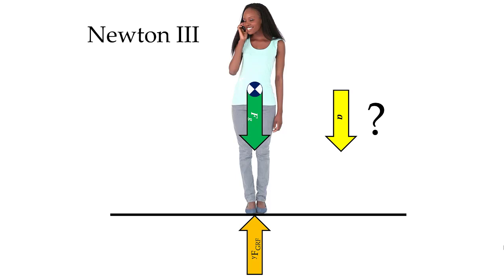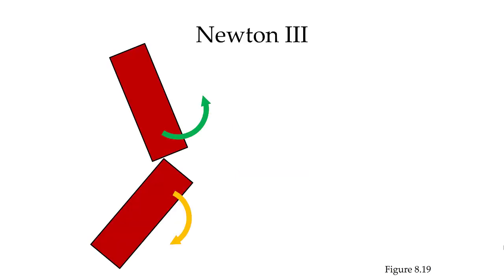Newton's third law tells us that for every force there is an equal and opposite reaction force. Those forces are equal in magnitude, opposite in direction, and acting on different bodies. We can say the same thing about a torque: for every torque, there is going to be an equal and opposite reaction torque — equal in magnitude, opposite in direction, and acting on a different body.